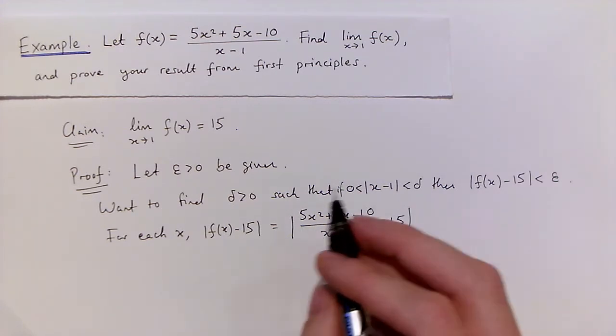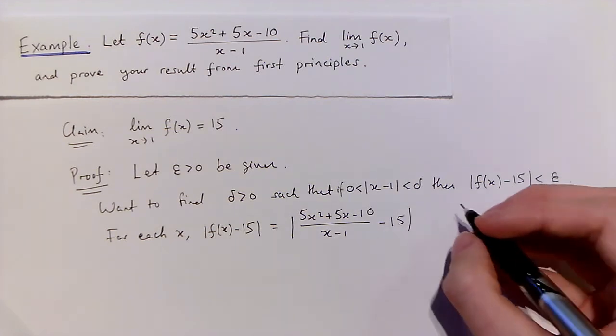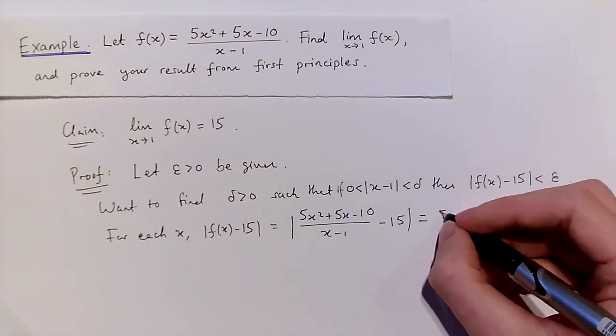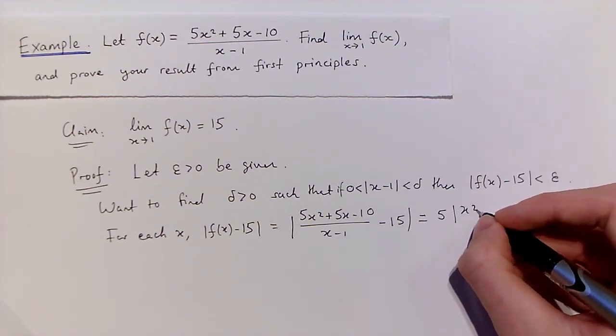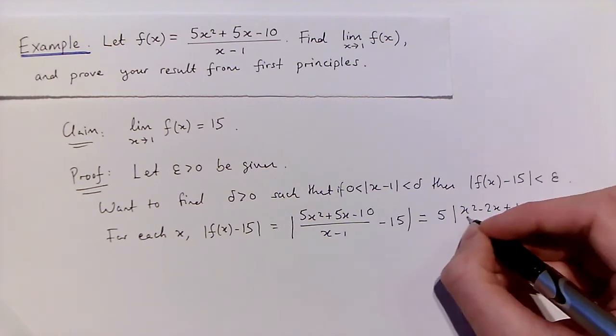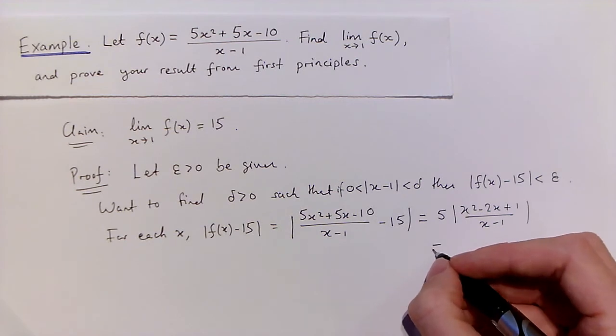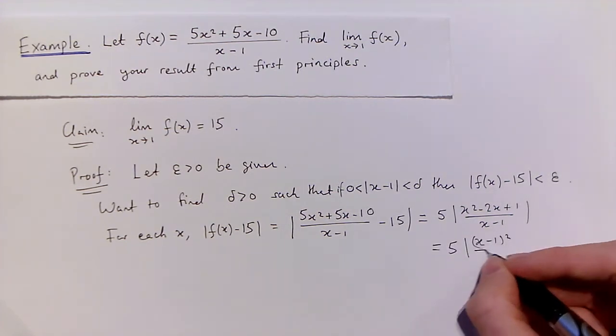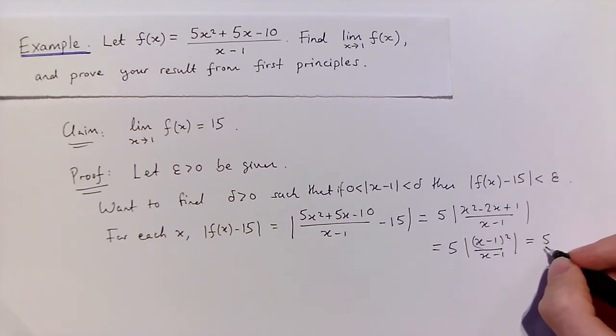And performing some algebra and collecting everything over a common denominator of x - 1, and then also pulling out a factor of 5 from the front, you get 5 times the modulus of (x² - 2x + 1) all over (x - 1). You should check this step. Which factorises to (x - 1)² over (x - 1),